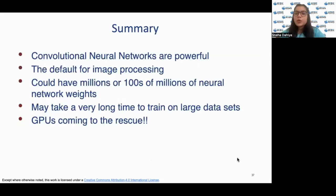Let's summarize what we have learned in both of the lectures. We learned about convolutional neural networks, how they are efficient for image preprocessing and for computer vision machine learning models. Convolutional neural networks are powerful. They are default for image preprocessing. There could be millions or hundreds of millions of neural networks and there can be multiple hidden layers in a convolutional neural network. There is no right number and there is no fixed or right number for the layers to include in your model. However, it may take a very long time to train on large datasets. Finally, thank you so much for your patience listening.